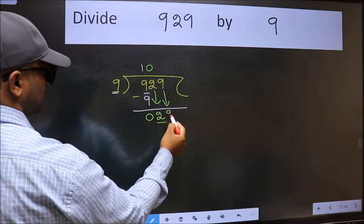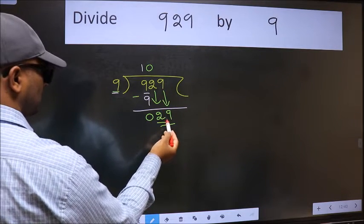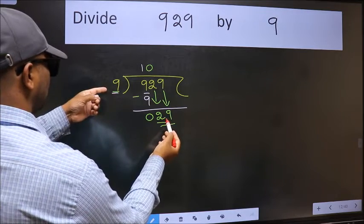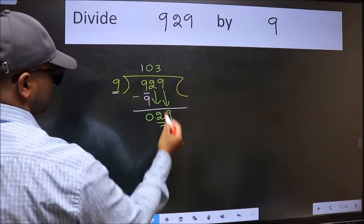Now we have 29. A number close to 29 in the 9 times table is 9 times 3 equals 27.